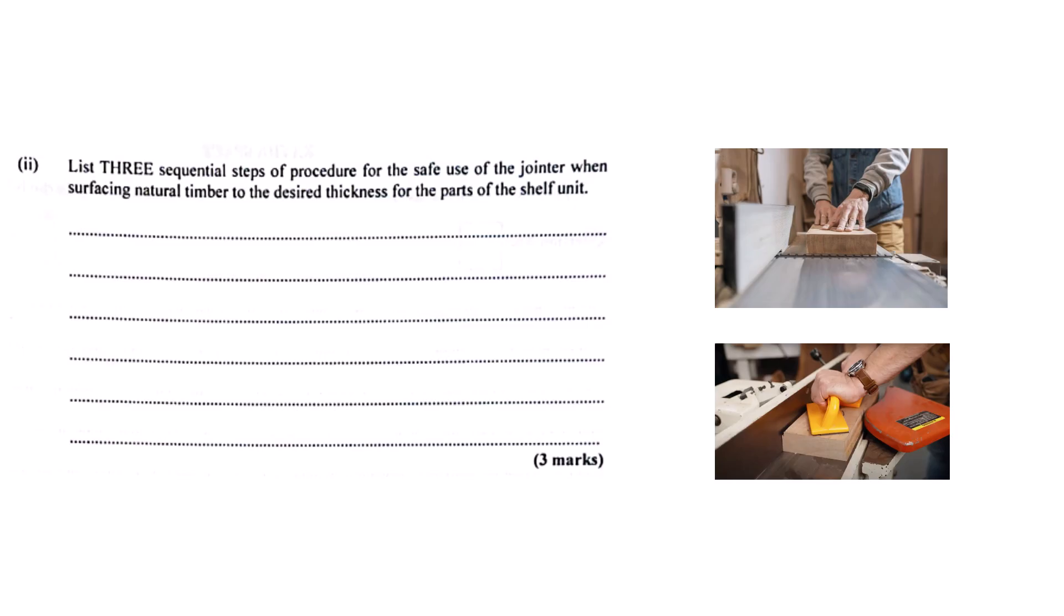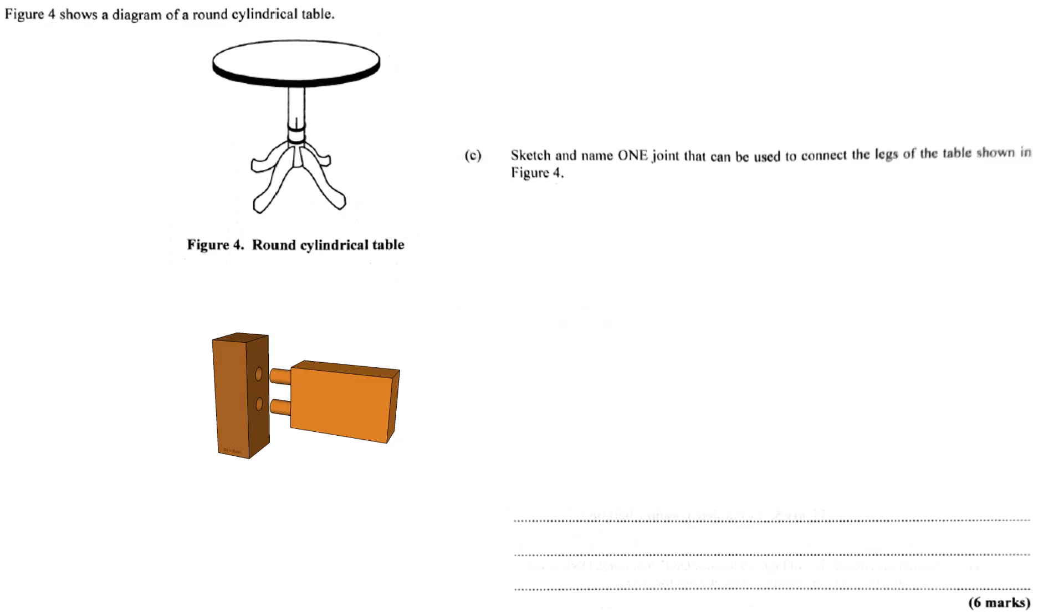Let's switch to tables again. We talked tabletops. What about legs, especially for a round table with one central pillar or pedestal? How do the feet attach to that? For attaching feet or legs radiating out from a central pedestal, dowel joints are a very common and effective method. Drill holes into the bottom of the pedestal and the tops of the feet, match them up, apply glue, insert dowels, clamp it together. Creates a strong mechanical lock. Simple and strong.